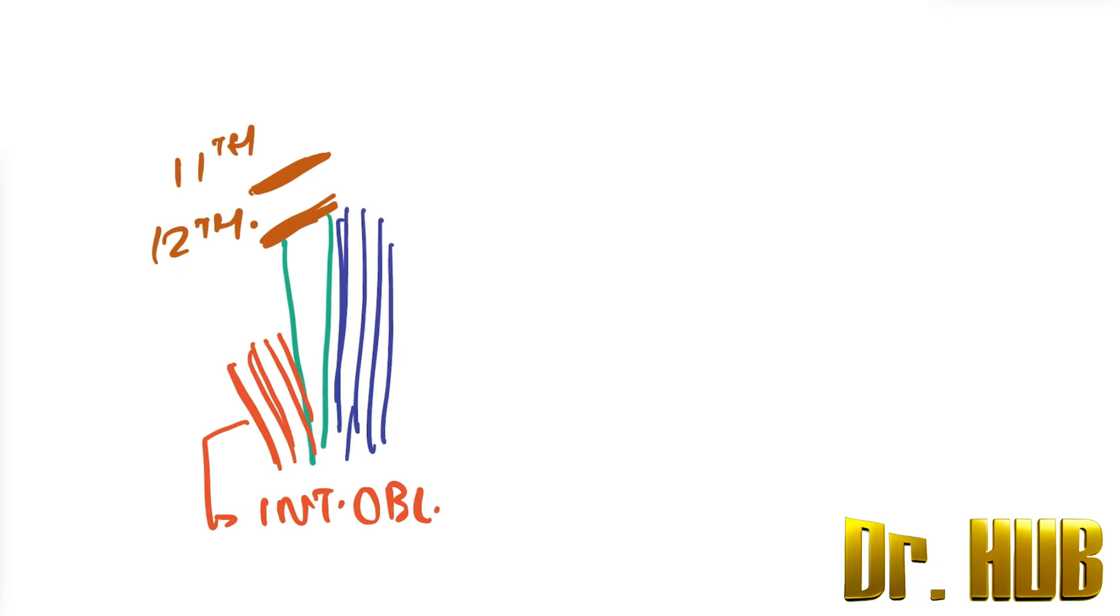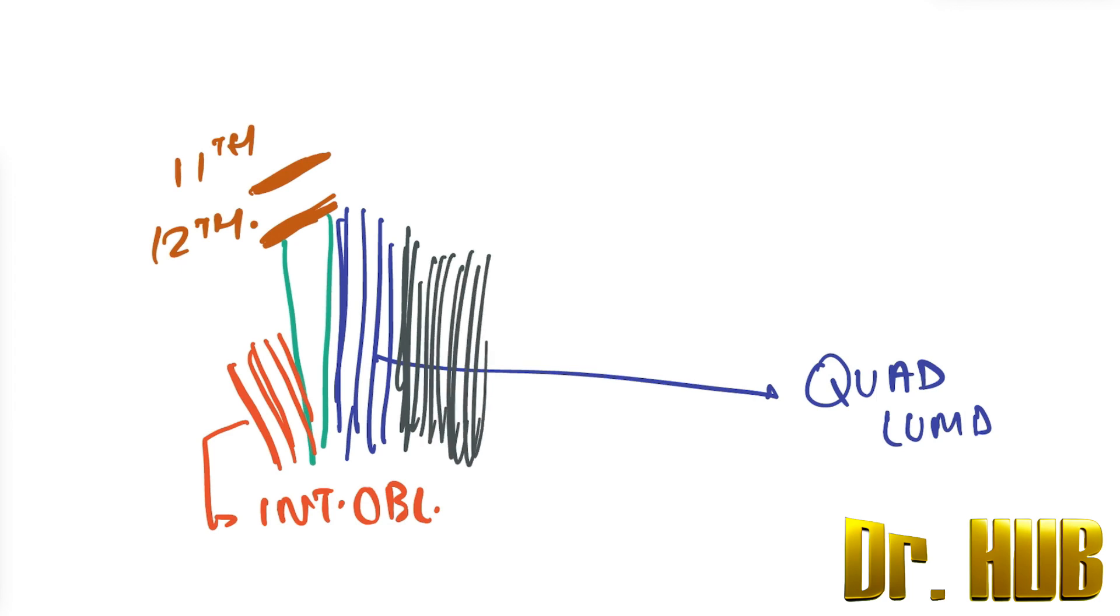So this will be the 11th rib. The superior lumbar triangle will be roughly here and the muscles which are surrounding this: internal oblique, next on the other side quadratus lumborum, and next this is the erector spinae. So these are some important muscles surrounding the superior lumbar triangle.